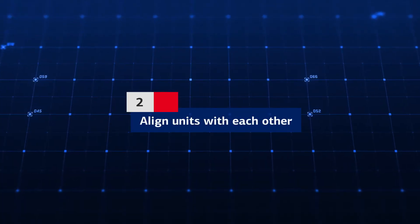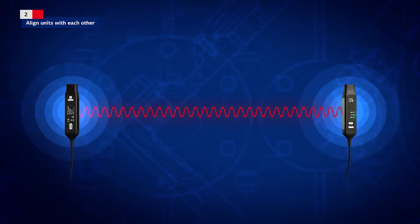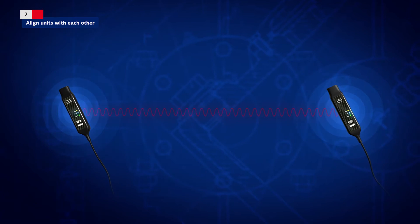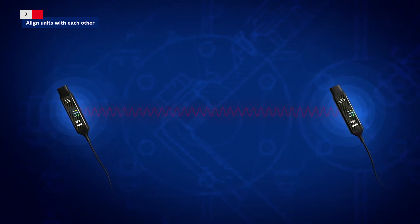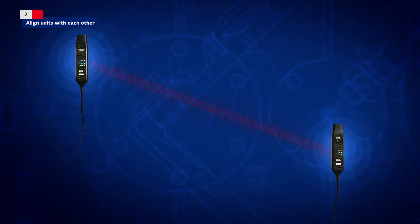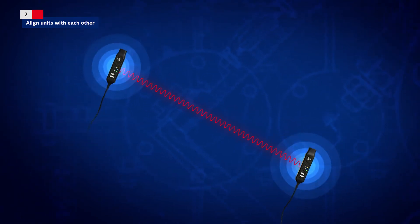Rule 2: Align units with each other. Ensure that the AirBridge units are mounted parallel to each other. In most cases, when the line of sight path is horizontal, the AirBridge should be positioned vertically. Where the AirBridge units are placed at a height that is greater than the distance between them, try to tilt them.